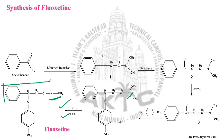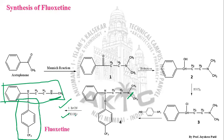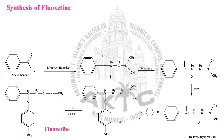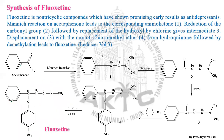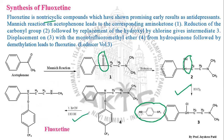After N-dealkylation, we arrive at the final compound, fluoxetine, a non-tricyclic antidepressant. In summary: acetophenone undergoes a Mannich reaction to give Structure 1, reduction converts the ketone to an alcohol, chlorination gives Structure 3, addition of para-trifluoromethyl phenol introduces the side chain, and finally N-dealkylation gives fluoxetine as the final product.